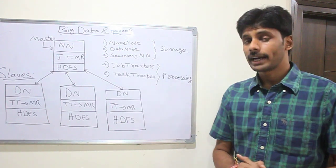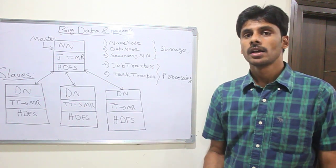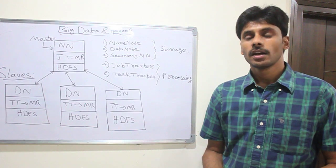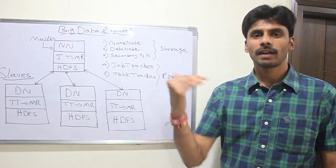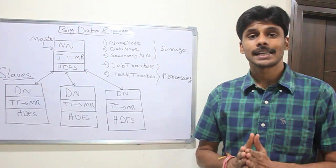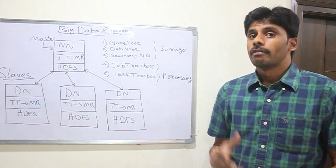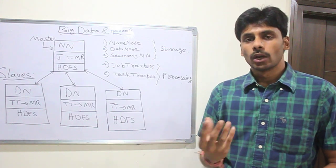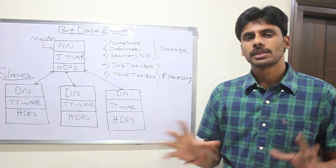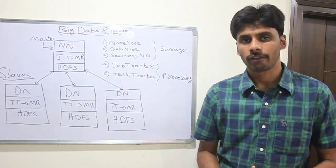And then the velocity. The speed with which this data is generated, for example the flight information - as the flight is traveling it keeps sending the sensor information back to the closest airport of where exactly it is, the location of it. Similarly, the satellites keep sending the various images of the planet using which a lot of things can be derived.